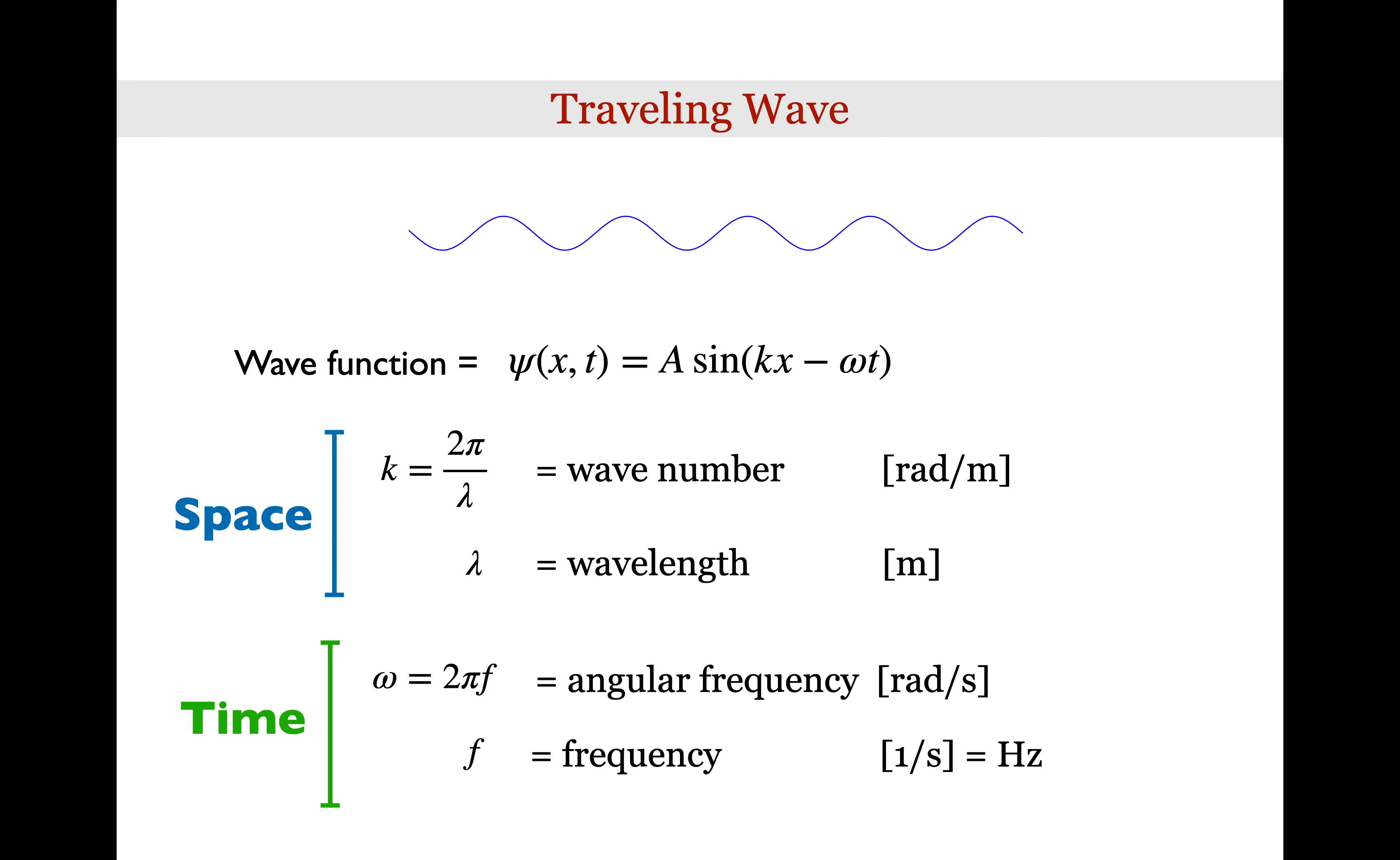Thus, the wave number k is telling us something about the spatial behavior of the wave, and the angular frequency omega is telling us something about how the wave behaves in time.